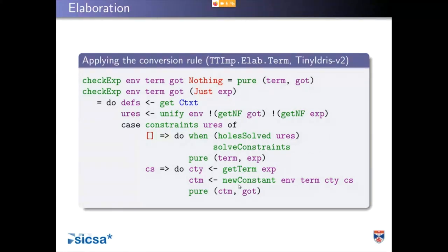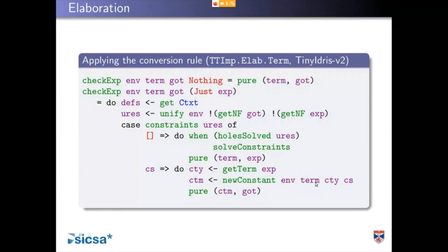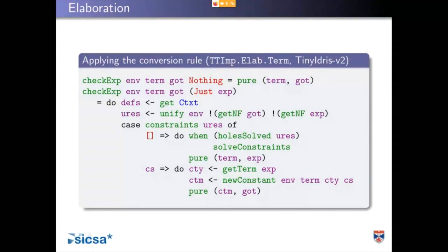If there are constraints, we're stuck for the moment, so we make a new constant. This term that we think is the result — we're going to hide it behind a guess. We put it inside a guess and say this term is the guess for a solution under these constraints, and it will become the real solution once those constraints are solved. The constant we're returning is essentially an application of that guess. This is where we plug in the unification check, and other than that, everything else inside the elaborator is the same.